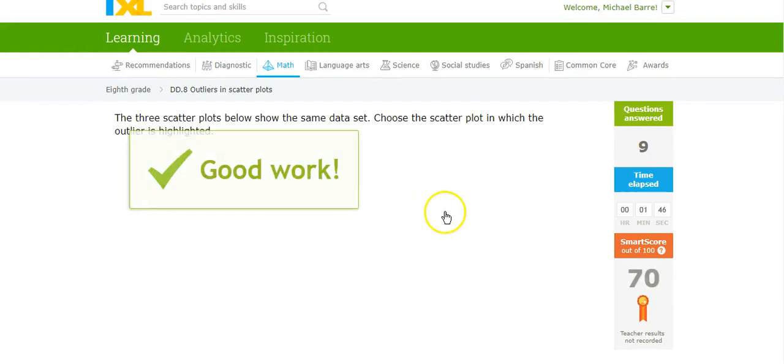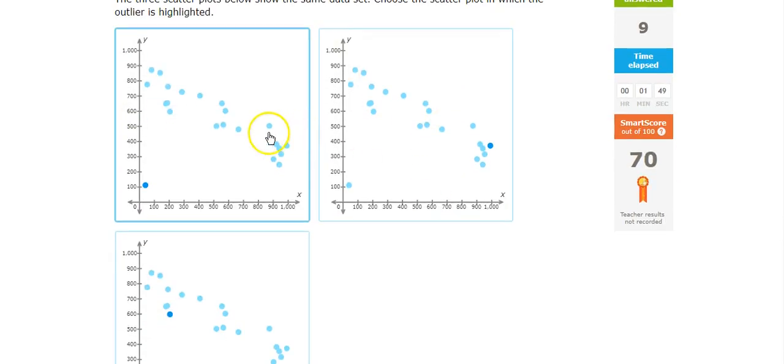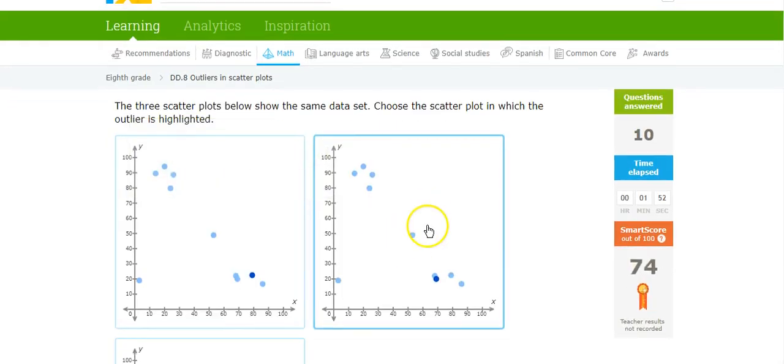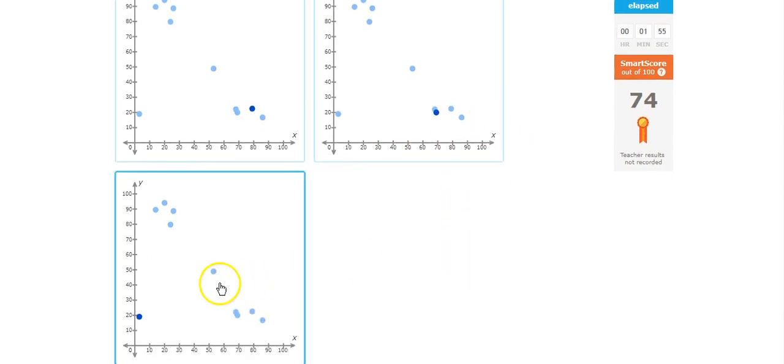So there's ramping it up to three data or three graphs. There's an outlier right there. Not an outlier. Not an outlier. Outlier.